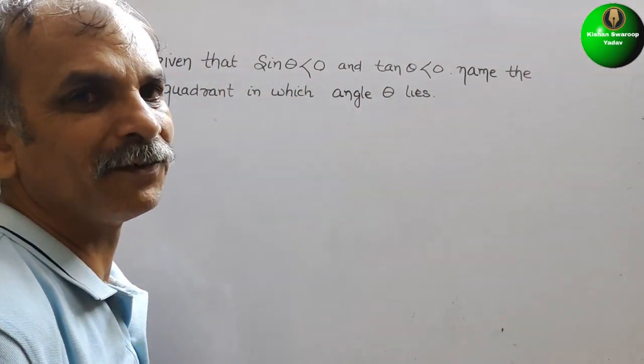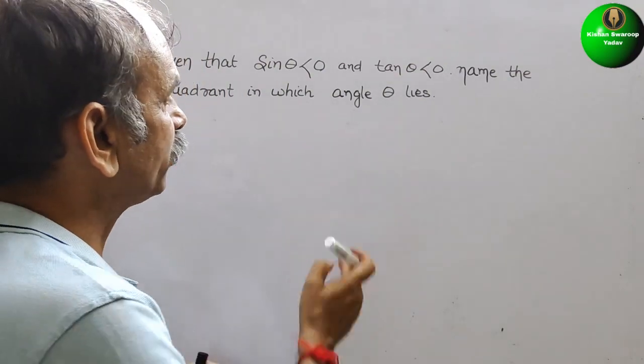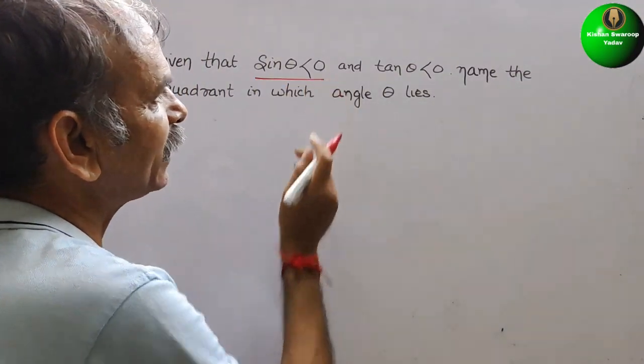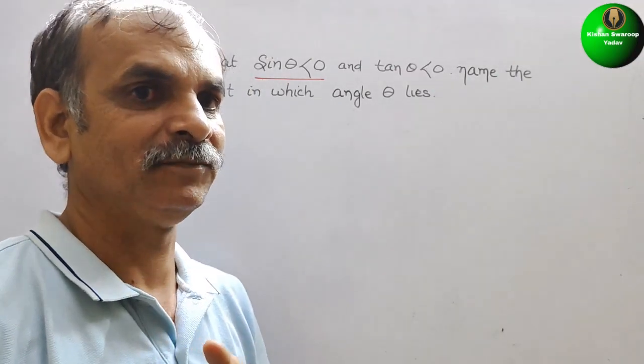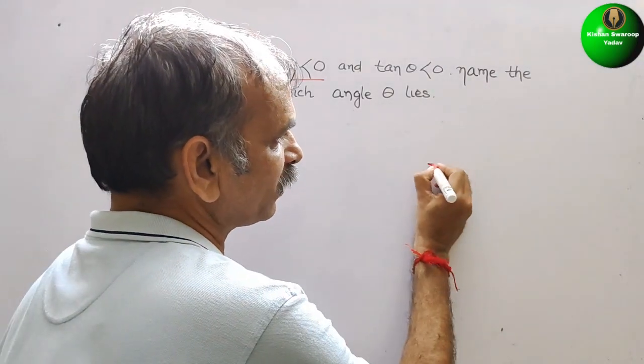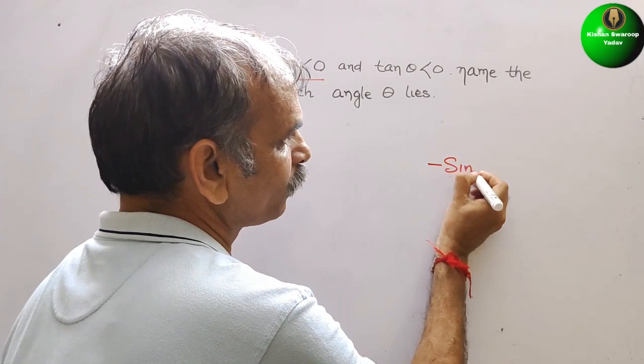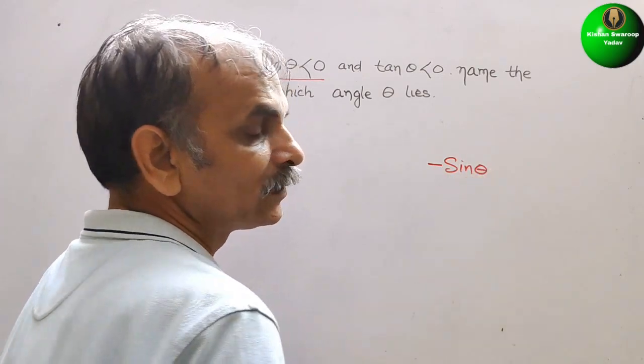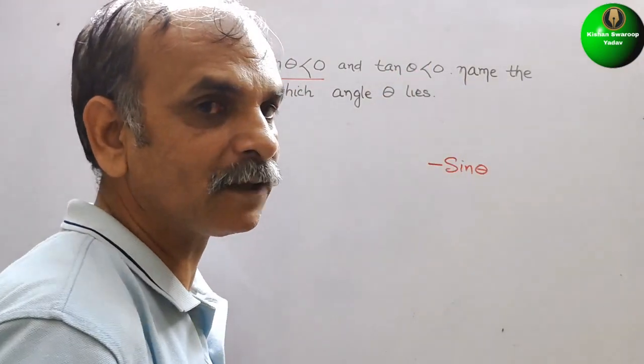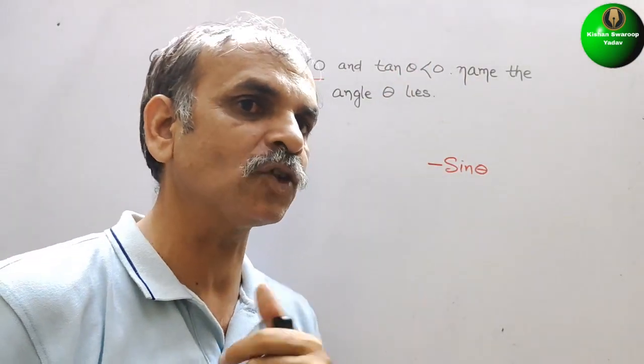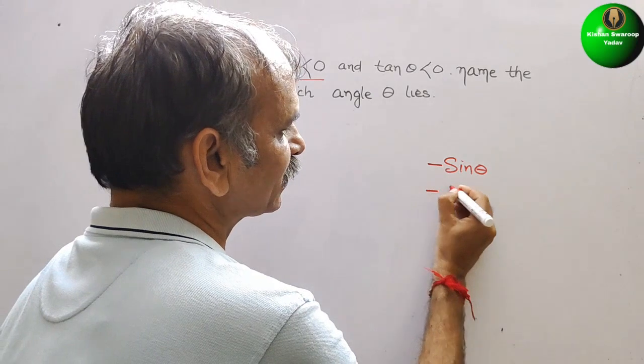So see what they have given. They have given sin theta is less than 0, that means it is minus sin theta. So first one is minus sin theta. Second, what they have given: tan theta is less than 0, that means it is also minus only. So minus tan theta.